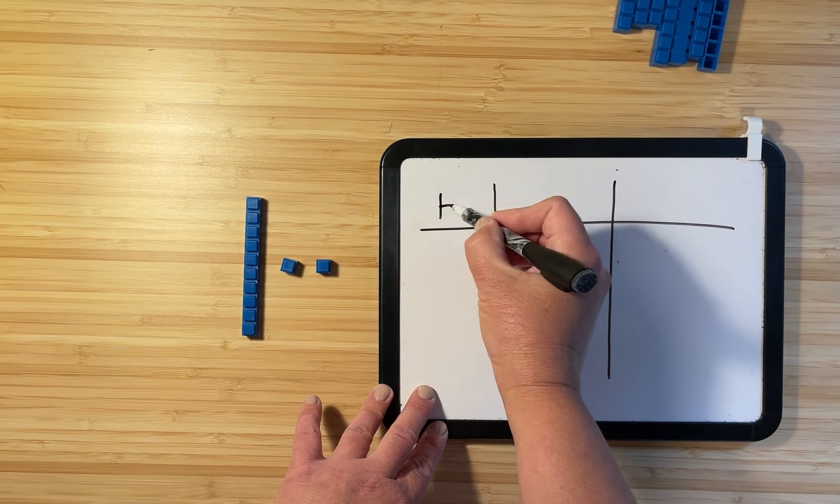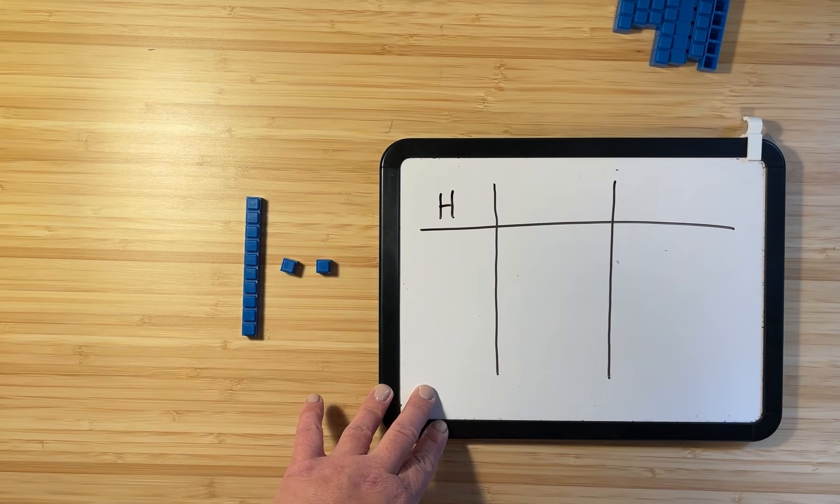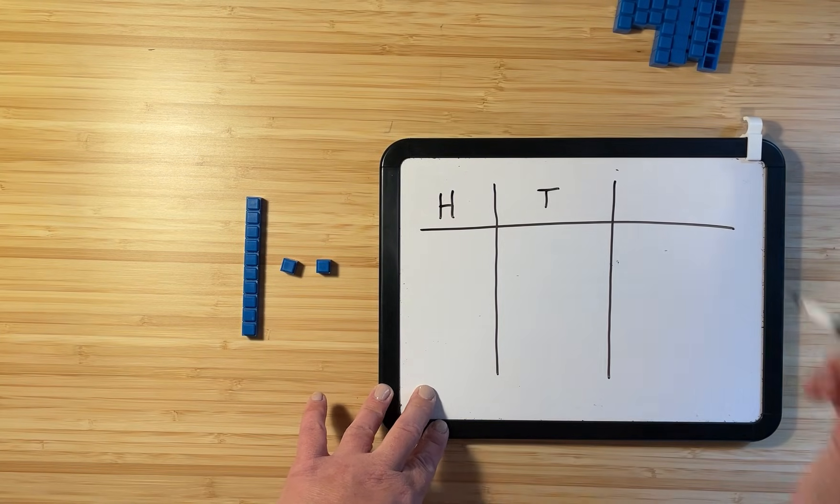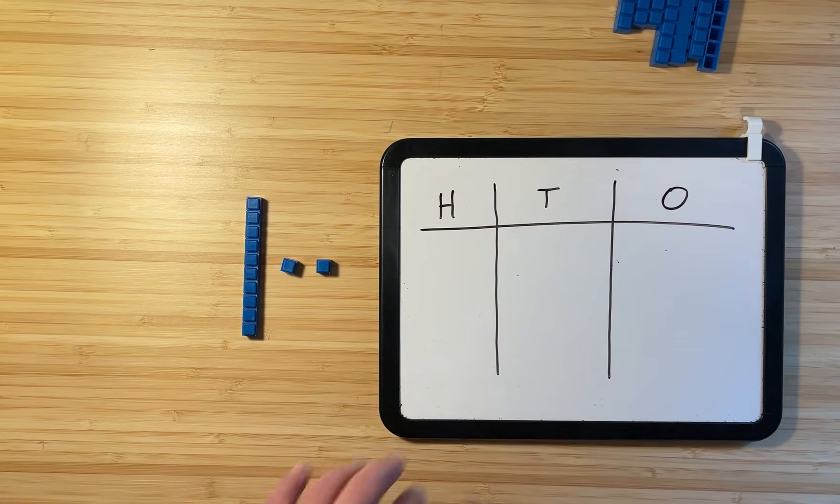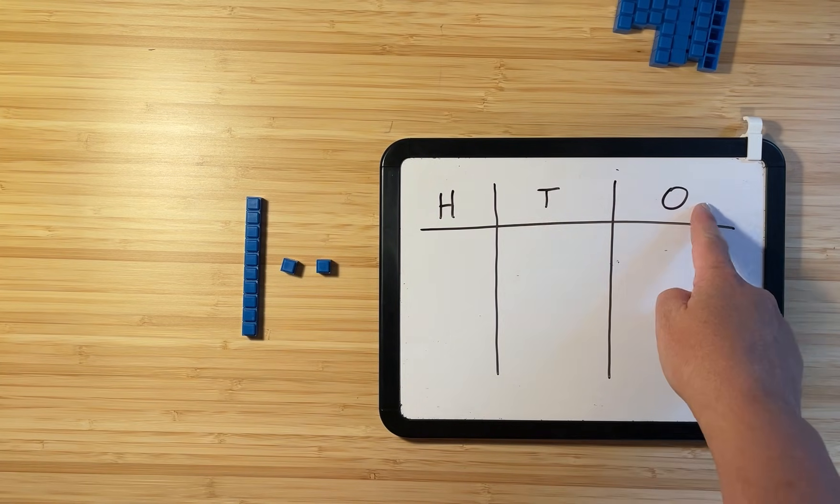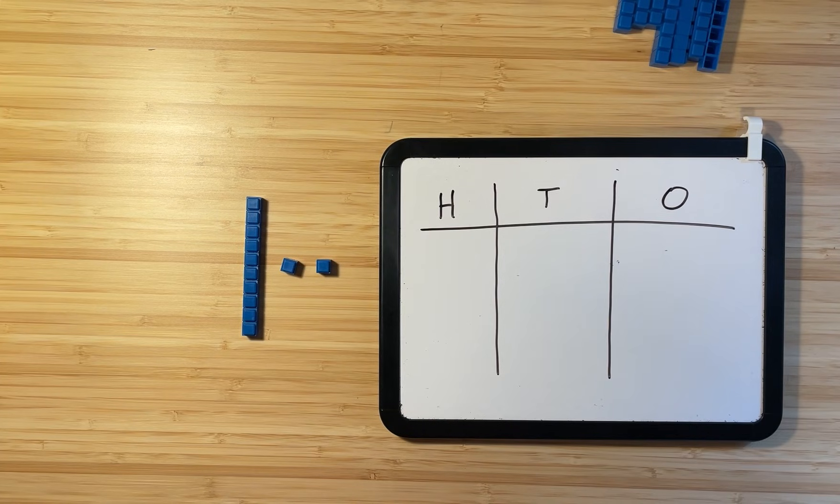I would like you to draw the exact same type of place value chart that I am drawing. We're going to put an H in this space for hundreds, a T right there for tens, and an O right there for ones. So we have hundreds, tens, and ones. Anytime you need more time, just pause this video and then restart it when you're ready.